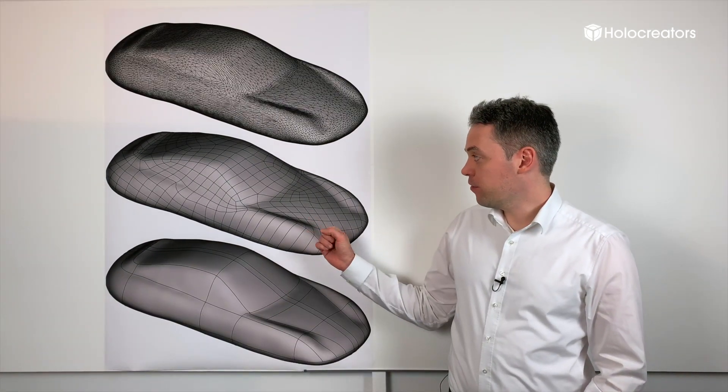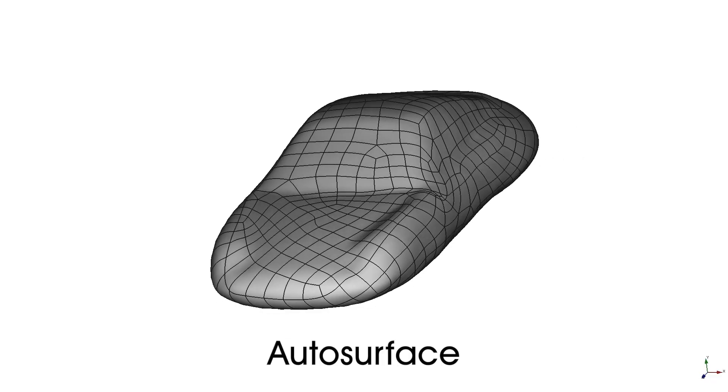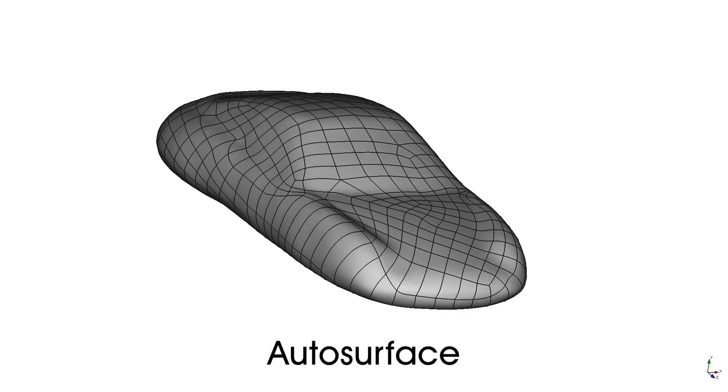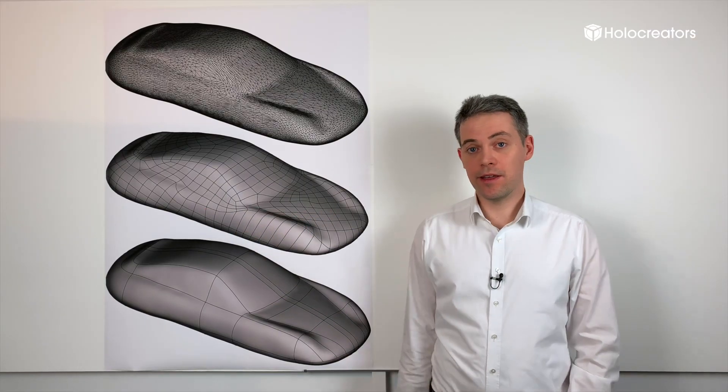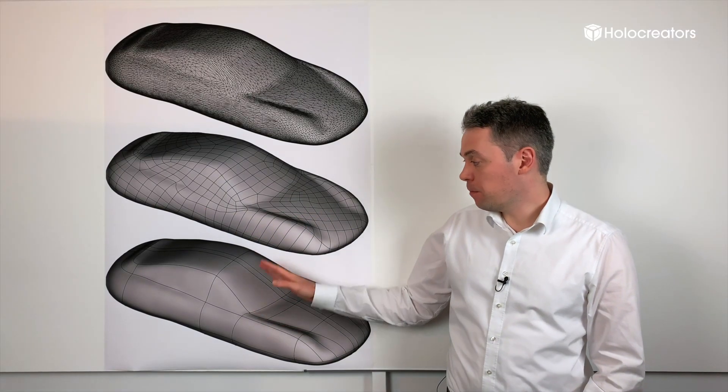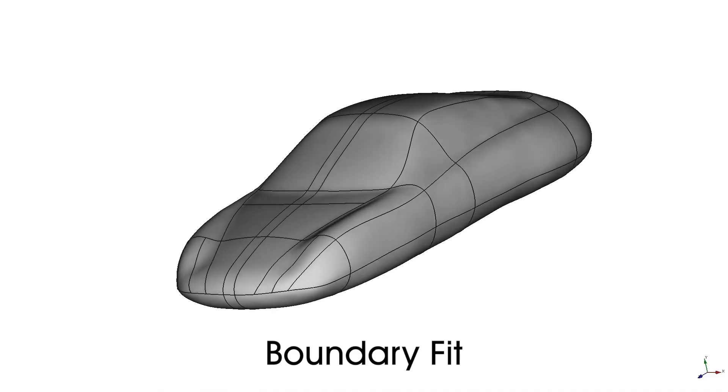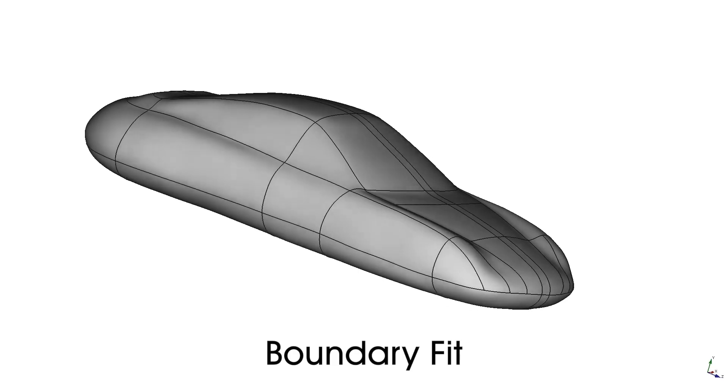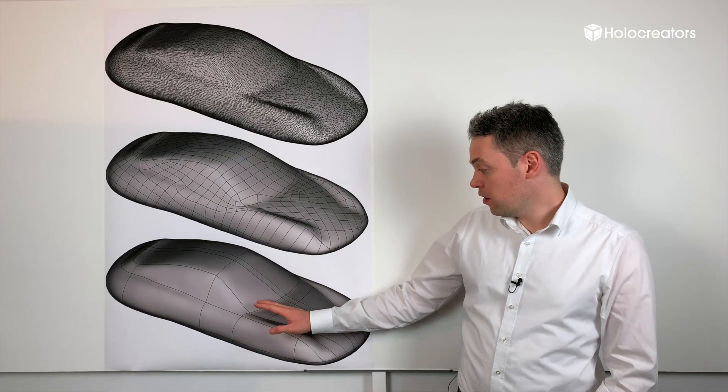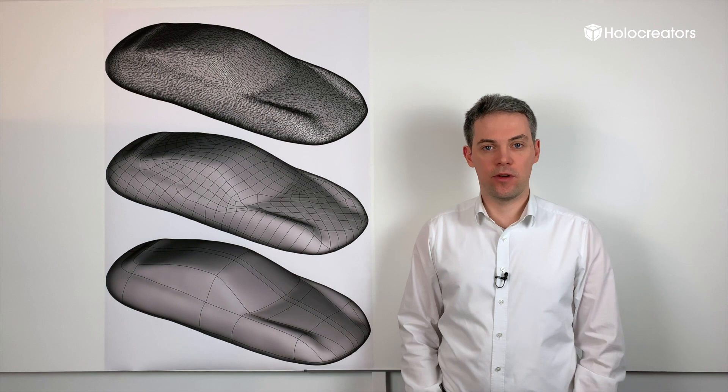In the middle here we have autosurface, which is an automatic creation of the NURBS curves and also of the surfaces in between. And down here we have boundary fit, which is a manual creation of the NURBS curves and an automatic molding of the surfaces from the underlying 3D scan.